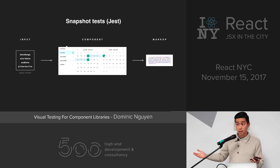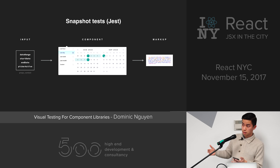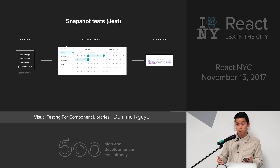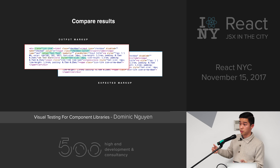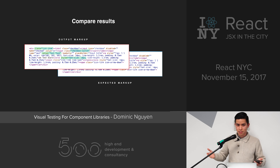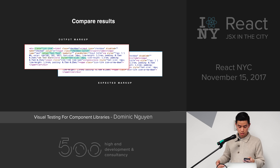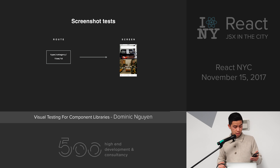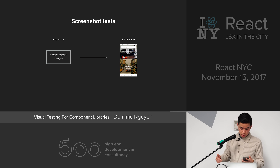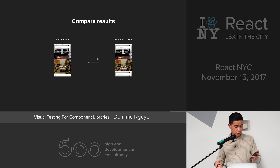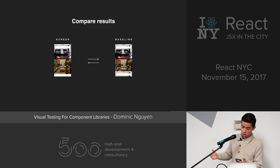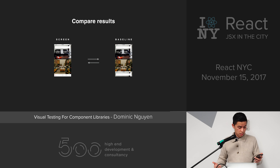Snapshot tests — Jest if you use them — complement unit tests. The main difference is that they also capture the generated markup, the HTML, so you can identify if any markup has changed in your component. But they don't grab the styling, and they don't grab the assets, or have any real idea of what the UI looks like to the user. Screenshot tests involve taking a screenshot of the UI and comparing them pixel by pixel to figure out if things have changed. They're useful for quickly comparing two screens based on a given route, but they often result in a lot of false positives, and tend not to be granular enough to track down UI regressions.